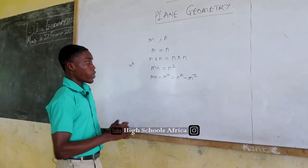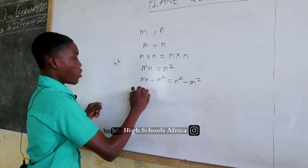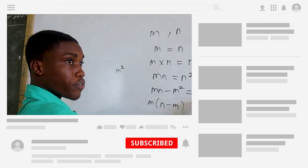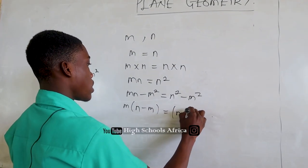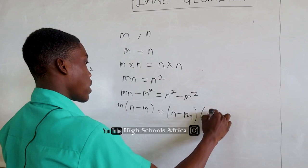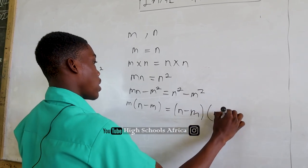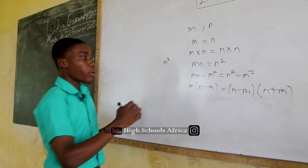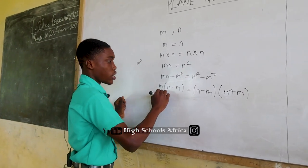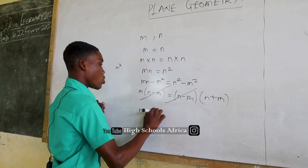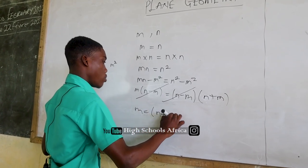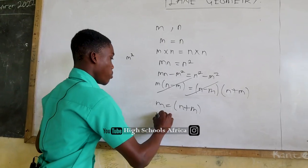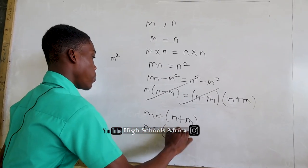To continue, we can factorize. We factorize M out — you are going to get M times (N minus M). And here we have the difference of two squares, so you get (N minus M)(N plus M). We have a common factor here, so we can cancel it out. This gives us M is equal to N plus M, which we can rearrange to M is equal to M plus N.